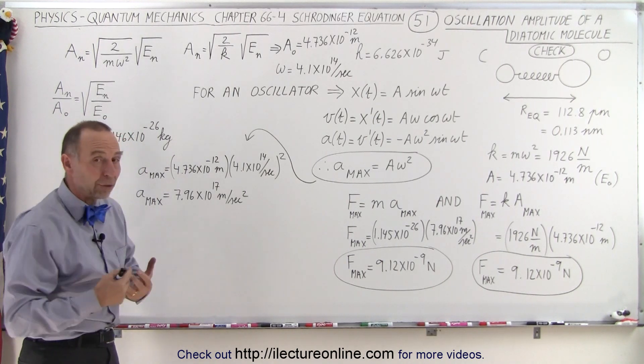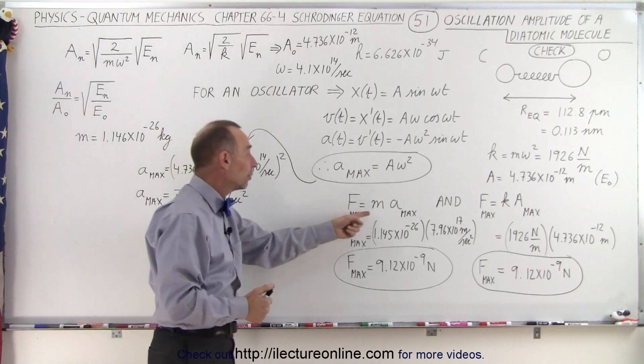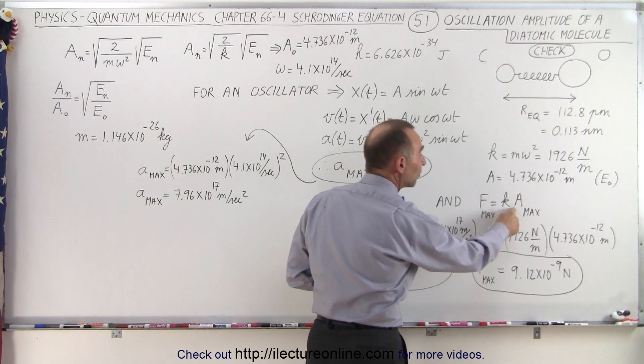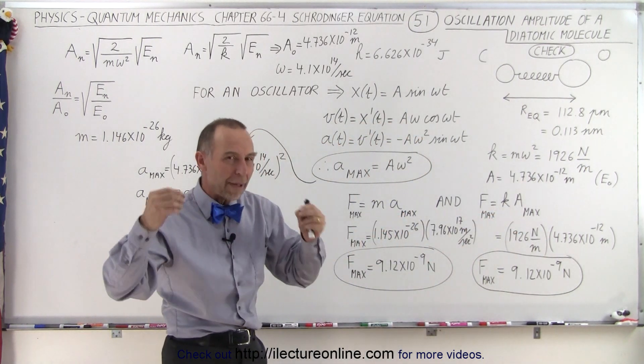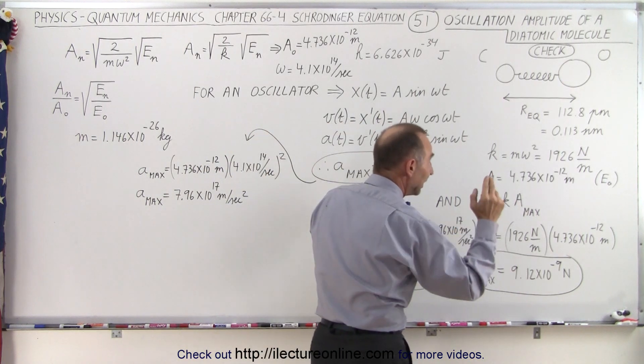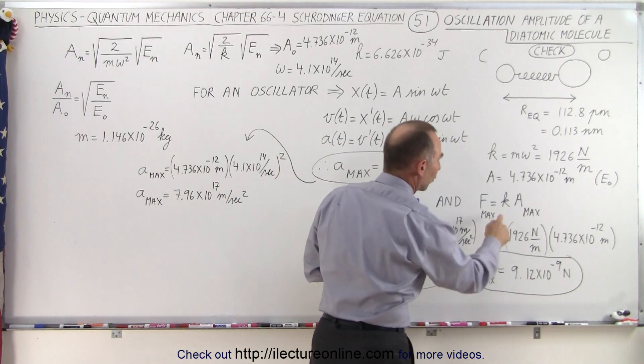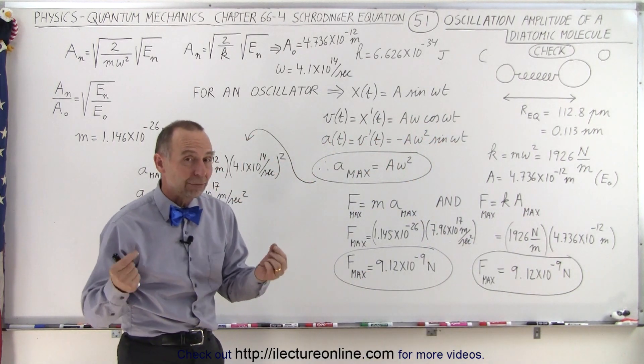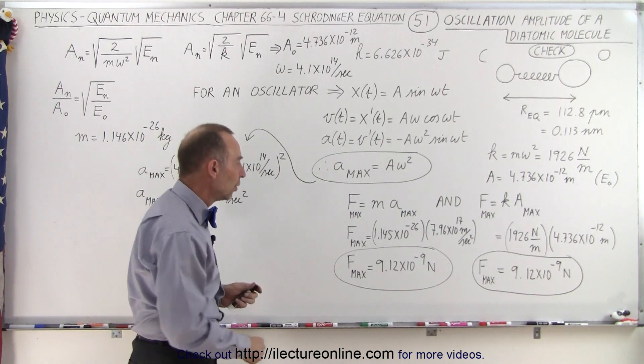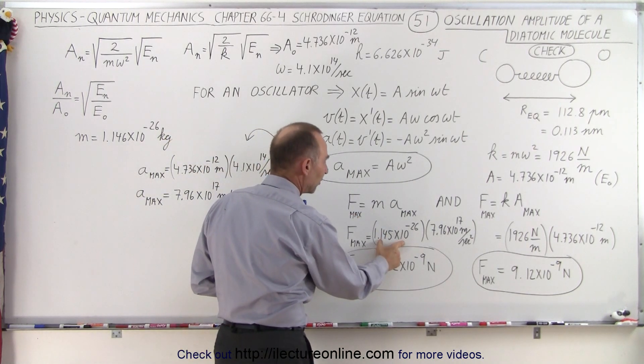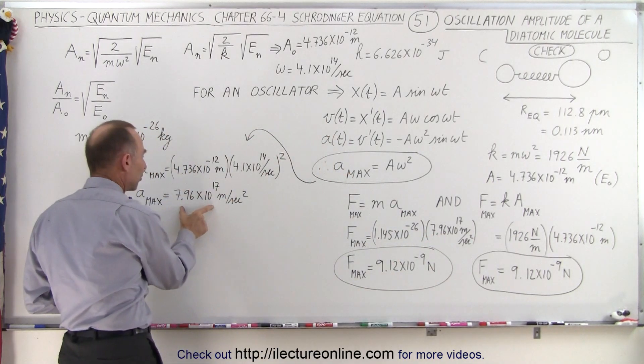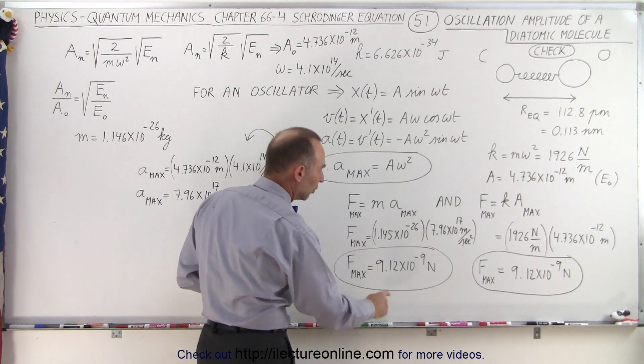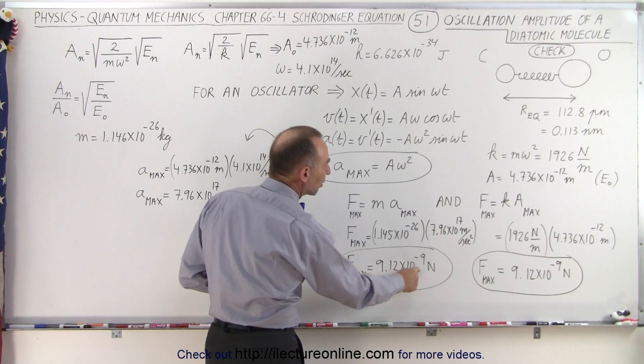Now what we're going to do is realize that using Newton's second law, F equals ma, and using the spring constant, we know that the force of the spring is equal to k times x, and the maximum force is experienced at the maximum amplitude. In this case it would be the intermolecular forces, k times the maximum amplitude. And if we calculate the force in both cases, we should get the same result. So here, F equals ma, we plug in the reduced mass, we find acceleration here that came from over here, and then multiply that, we have the maximum force between the two atoms at the maximum amplitude of 9.12 times 10 to the minus 9 newtons.